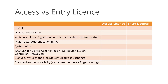Access licenses give you use of the full range of features for secure network access control, including the ability to integrate and share contextual data with third-party devices such as firewalls, IPS-IDS, and MDM servers, as well as the ability to leverage extensive device fingerprinting capabilities in order to build comprehensive access policies.